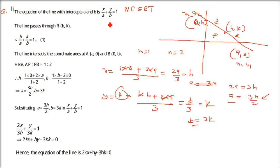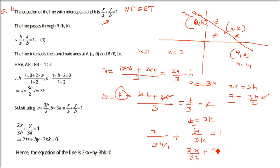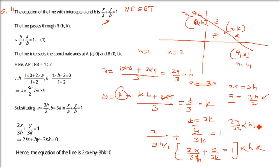Now a and b are known. Putting into the equation: x/(3h/2) + y/(3k) = 1, which gives 2x/3h + y/3k = 1. Multiply through by 3h: we get 2x + (h/k)·y = 3h — but simplifying carefully, multiply by 3h, then 3h/3h cancels giving 2x, and for the y term 3h/3k gives h/k·y.